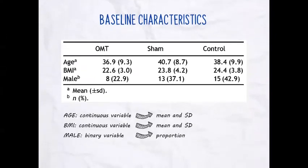Looking at the descriptive statistics, we have two tables about baseline characteristics. The variables are age, BMI, and gender. Age and BMI were considered continuous variables — the measure of central tendency is mean and the measure of dispersion is standard deviation. The authors didn't say if the data were normally distributed, so probably they were, otherwise they should have used median and interquartile range, since mean and standard deviation are highly affected by outliers. Considering the quite large sample size of 105 patients, the data were probably not highly skewed, which is why they used mean and standard deviation.